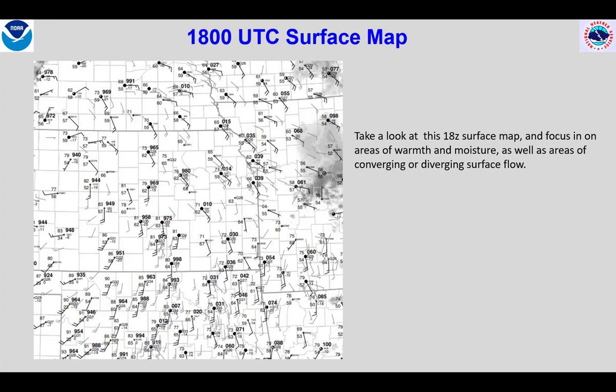On the 18Z surface map, you should have observed a surface low approaching north central Kansas with a warm front extending southeastward across northern and east central Kansas, separating southerly flow in warmer conditions south of the boundary from southeasterly flow in cooler conditions north of it. There's also a trough extending south of the surface low, separating southerly surface flow from westerly flow. Also notice a surge of mid-60s dew points working northward at this time across southeastern into east central Kansas.